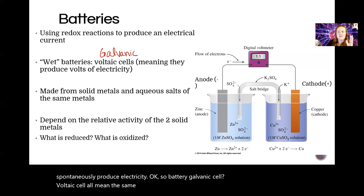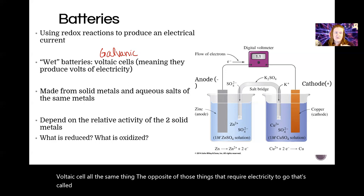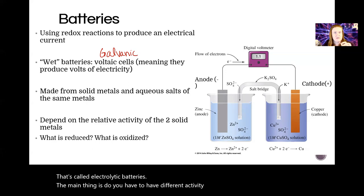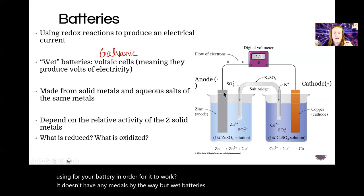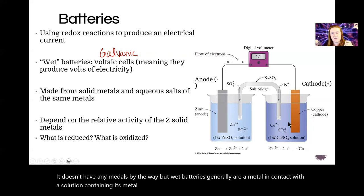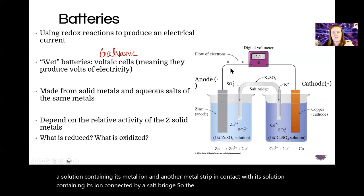They mean batteries that spontaneously produce electricity. So battery, galvanic cell, voltaic cell all mean the same thing. The opposite of those things that require electricity to go, that's called electrolytic batteries. The main thing is do you have to have different activity levels between the metals that you're using for your battery in order for it to work. It doesn't have to be metals by the way, but wet batteries generally are a metal strip in contact with a solution containing its metal ion and another metal strip in contact with its solution containing its ion connected by a salt bridge.